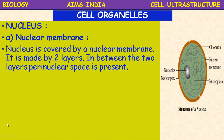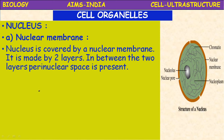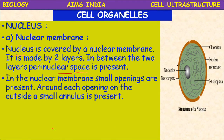We are discussing the nucleus of a eukaryotic cell. The nucleus is covered by a double-layered nuclear envelope or nuclear membrane. This nuclear membrane is made up of two layers, and between the two layers a peri-nuclear space is present — there is a space between the two membranes called peri-nuclear space.